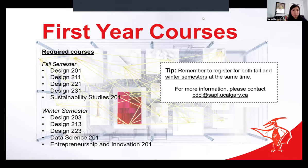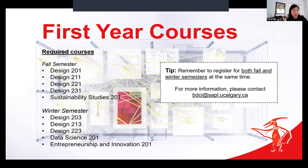These are the first year courses available as you come into fall 2023 and winter 2024. These are the recommended courses we want you to take so that you can progress in your degree and finish within four years. If you want to change anything or take less, definitely connect with me and we can talk about how to craft your degree progression. One tip as you go into registration: you need to register for both your fall and winter semesters at the same time, so make sure you register for winter because those classes can fill up quickly. If you have questions, you can contact me at bdci.sapl.ucalgary.ca.